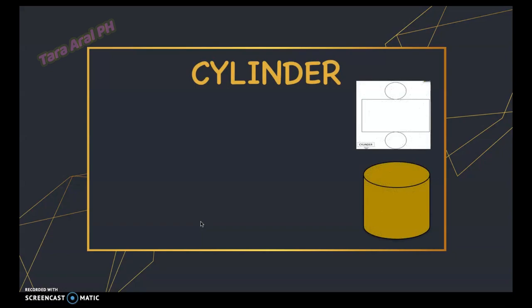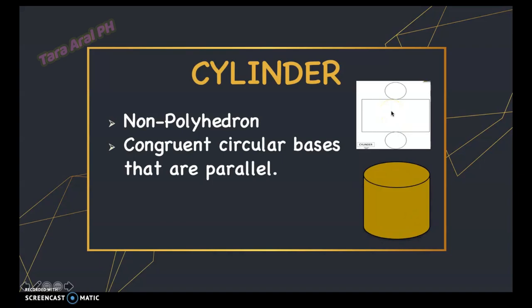Next we have a cylinder. A cylinder is a non-polyhedron with congruent circular bases that are parallel. So a cylinder has two bases that are circles, three curved faces, zero vertices, and no edges.